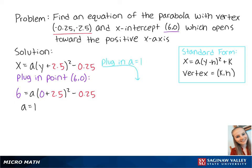Now we plug a equals 1 into our first equation, which gets us x equals 1 times (y plus 2.5) squared minus 0.25. This becomes x equals y squared plus 5y plus 6. This equation is the final answer.